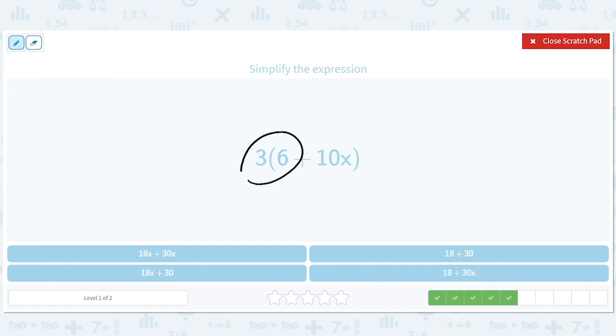3 times 6, 3 times 10x. So you get 3 times 6 plus 3 times 10x. This gives you 18 plus 30x.